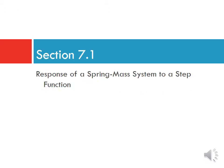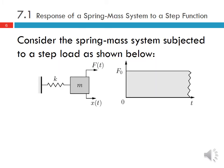First, let's consider the response of a spring-mass system to a step function. Consider the spring-mass system with our mass and spring — again, we're considering the undamped case. If we consider a step load as shown here, at time equals zero we increase the load to F₀ and then keep that load constant.